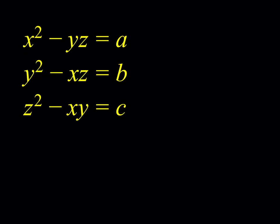This is a polynomial system with three unknowns. What makes the system more interesting is that A, B, C are given numbers and we're supposed to solve for X, Y, and Z. So A, B, C are basically parameters.